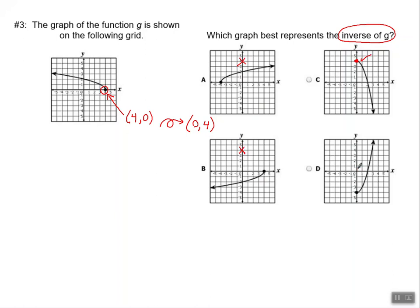0, 4, not here. 0, 4, not here. So simply knowing that this point is on g, so therefore this point would be on the inverse of g, gives us this as our answer choice. And we're finished with that inverse question.